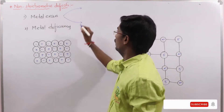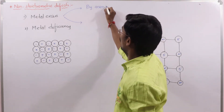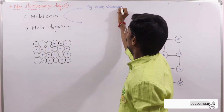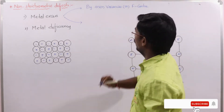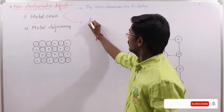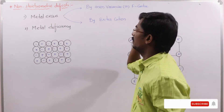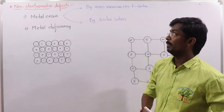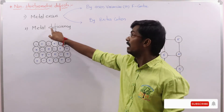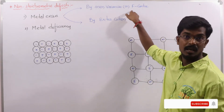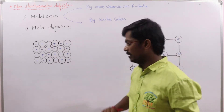Metal excess can occur either by anion vacancies — also called F-centers — or by an extra cation occupying an interstitial site. So the non-stoichiometric defects are two types: metal excess and metal deficiency. Metal excess occurs either by anion vacancy, which is also called an F-center, or by an extra cation.